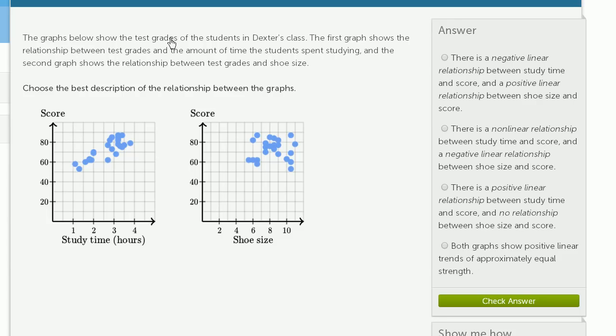The graphs below show the test grades of the students in Dexter's class. The first graph shows the relationship between test grades and the amount of time the student spent studying.